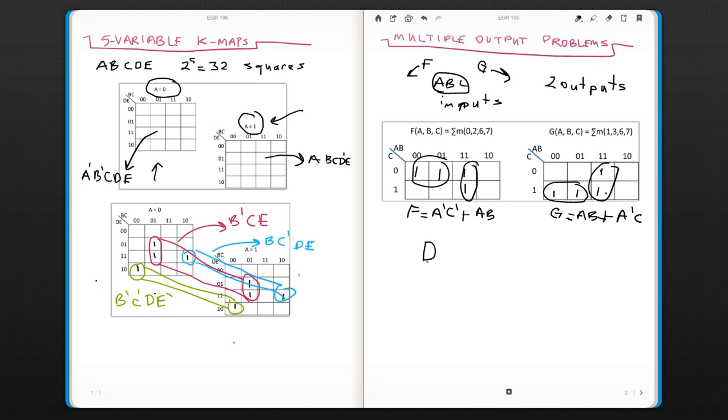So if I wanted to implement these with AND and OR gates, this is for F. So I have A0, C0, A, and B. And this would go to an OR gate. And so this is your F.